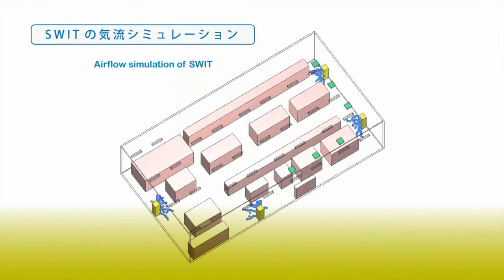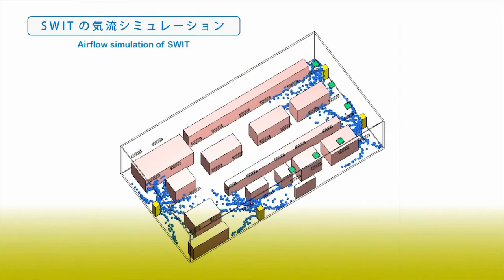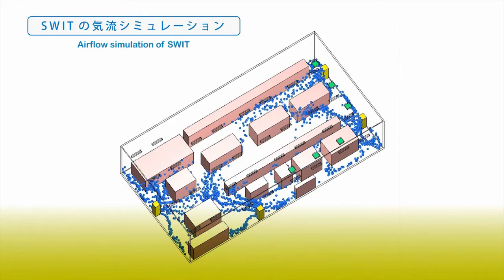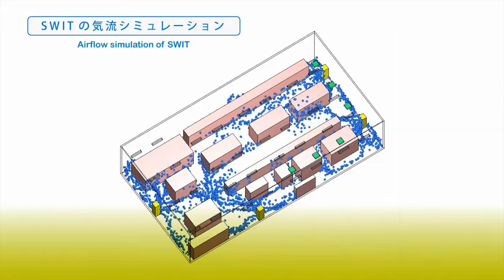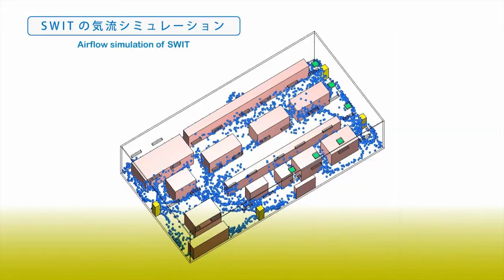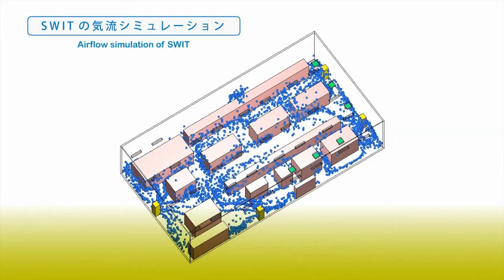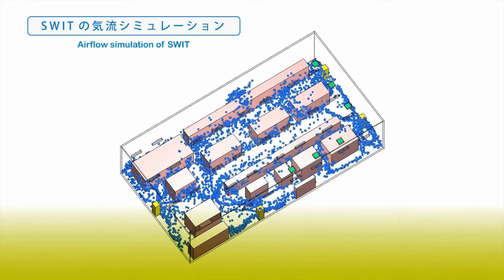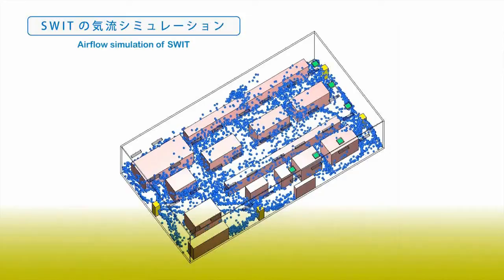Airflow simulation of SWIT. Let's take a look at an airflow simulation in which SWIT is applied in an electrical room. Even if there are devices and obstacles blocking the flow, the air is supplied to every corner of the room. Even if the location and layout of the devices are changed, there will be no construction modifications required to change the air outlet positions.